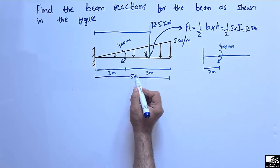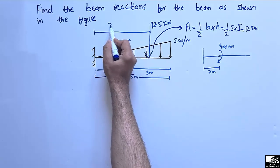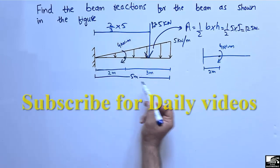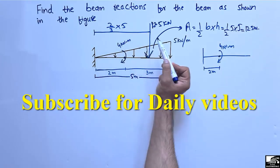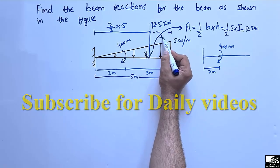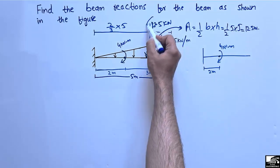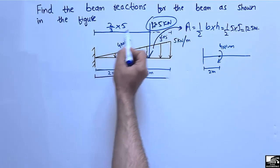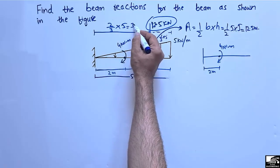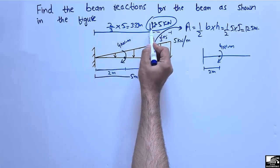The total base is 2 plus 3 equals 5 meters. The centroid of the triangle is located at two-thirds of the total length from the free end, which is two-thirds of 5, and the remaining distance is one-third of 5. So we are interested in the load of 12.5 kilonewtons acting at two-thirds times 5, which comes out to be 3.33 meters from the fixed support.